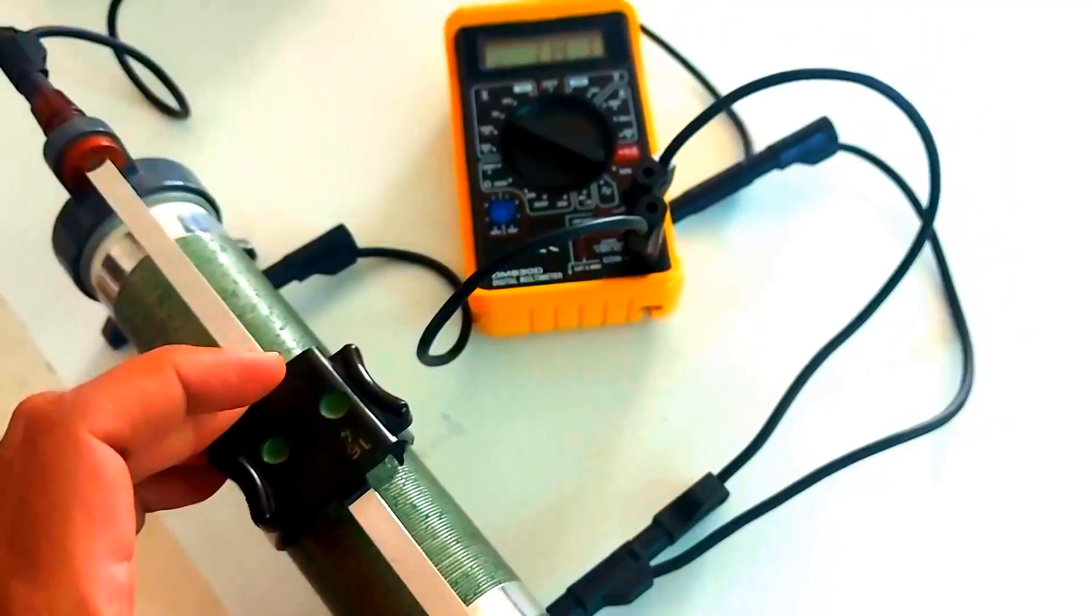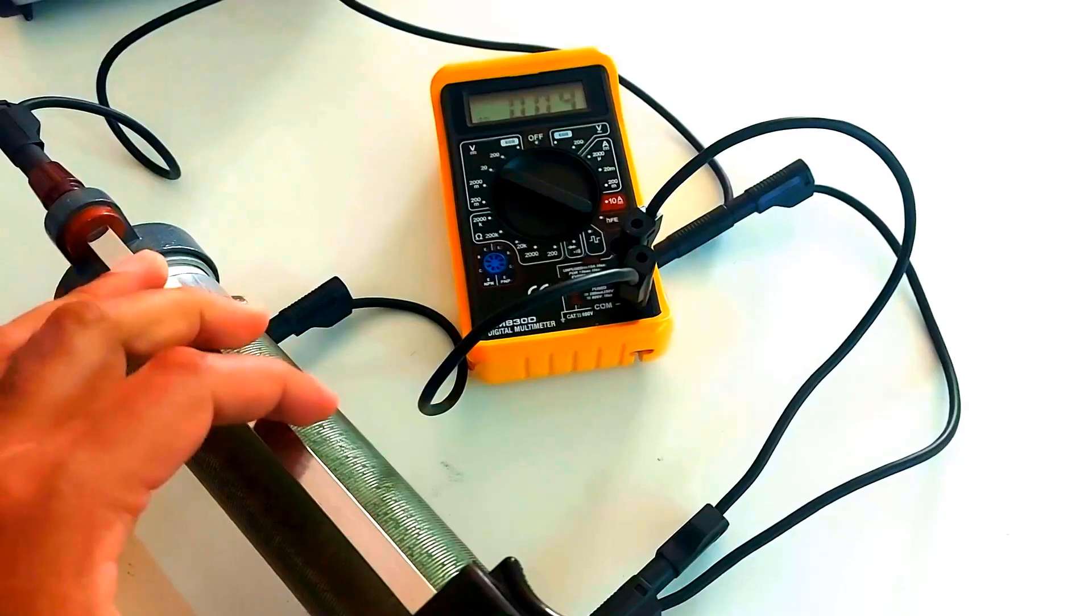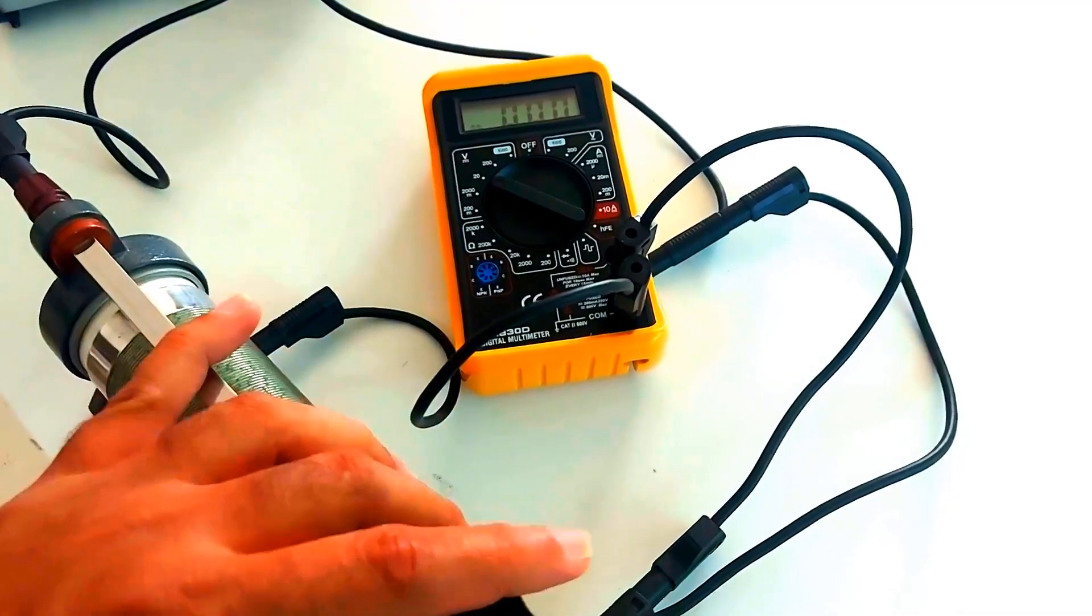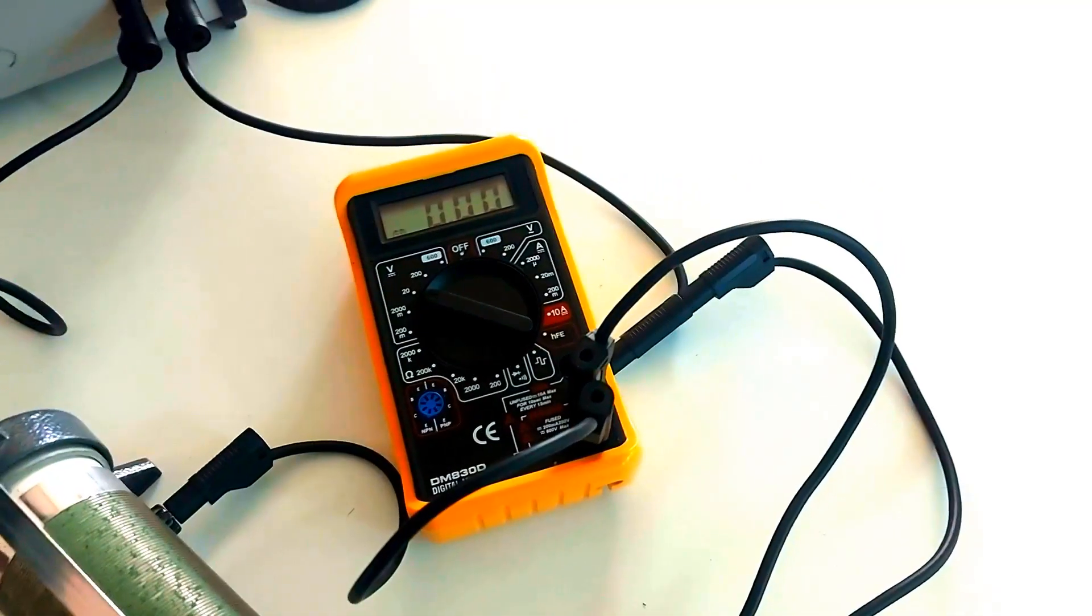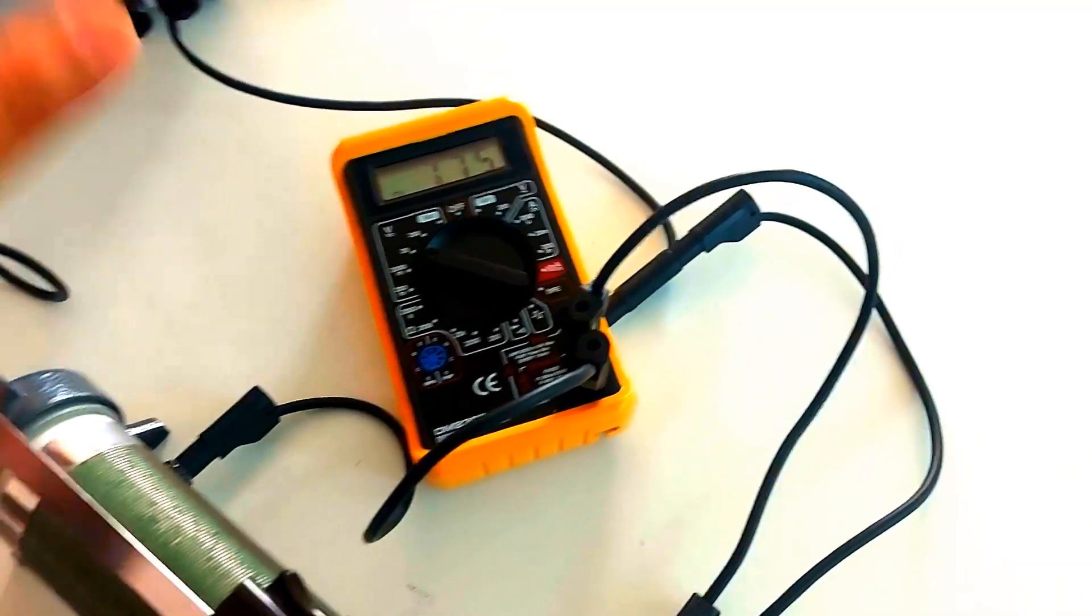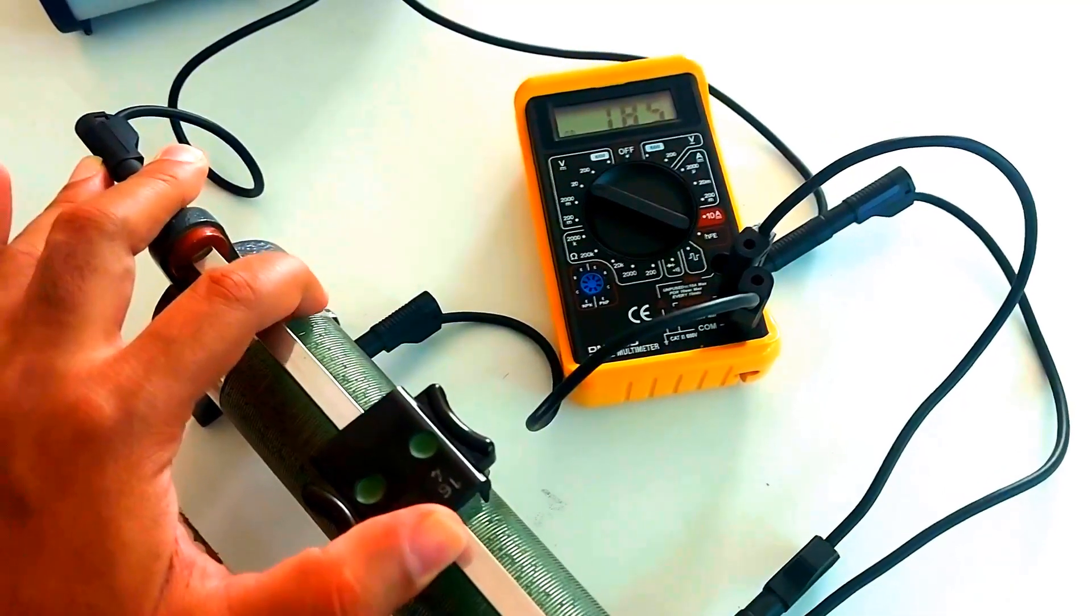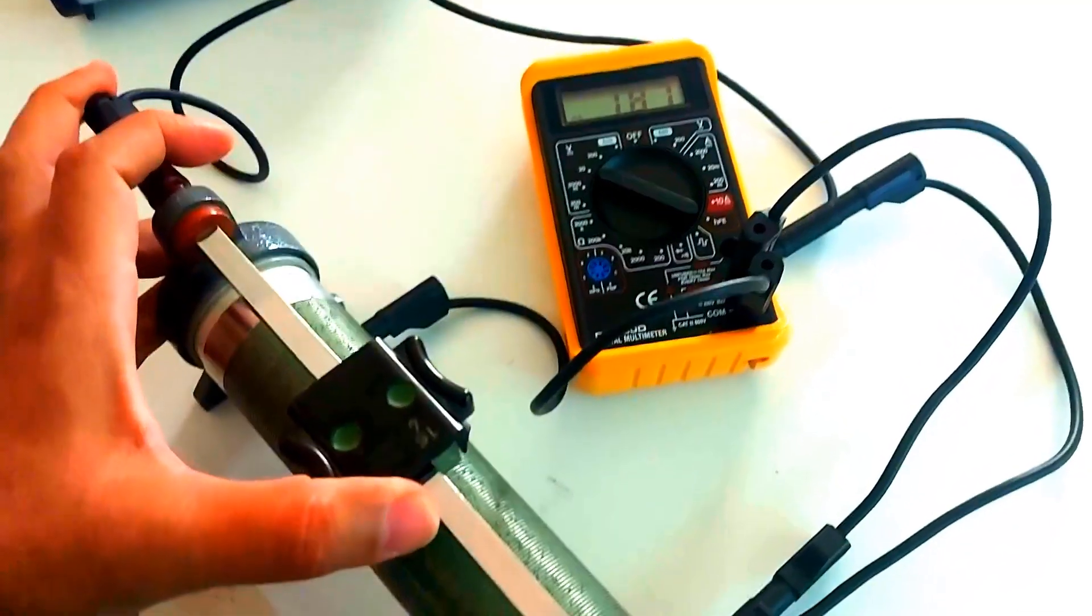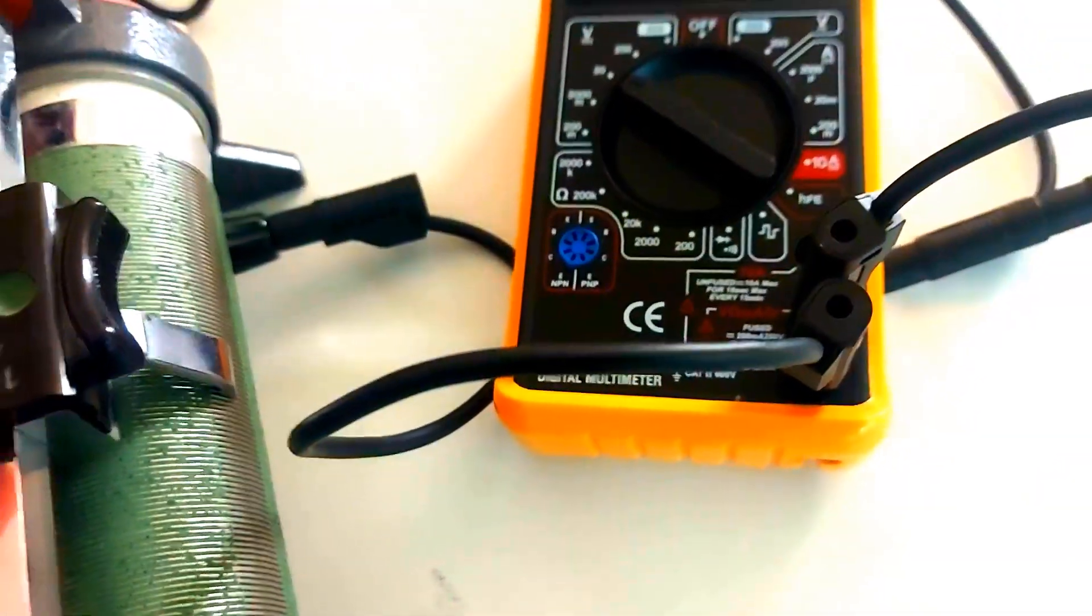I've connected a voltmeter across the rheostat. As I slide the contact, notice how the voltage changes. By increasing the length of the rheostat wire, the resistance increases, and the voltage drops. Slide it back, and the voltage rises.